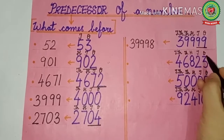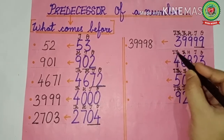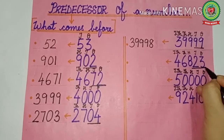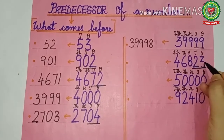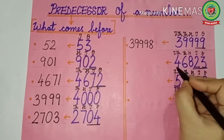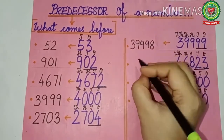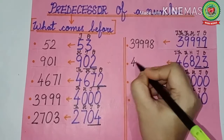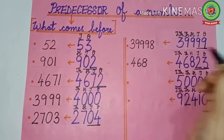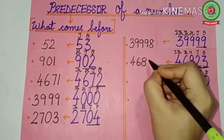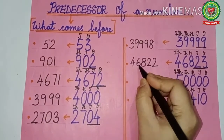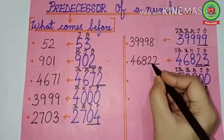Next number is 46823. Write the place values. Again, ones and tens together — that is 23. What comes before 23? That is 22. The remaining place values will remain the same — that is 46,800. What comes before 23 is 22. So the predecessor is 46,822.